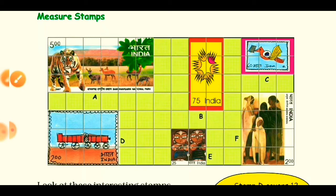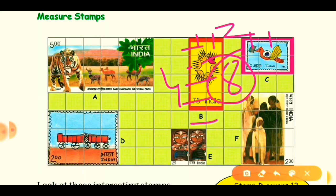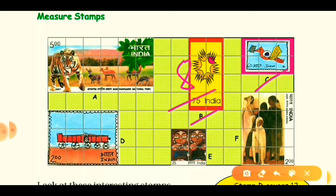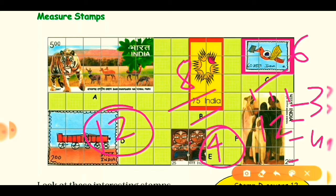Now let's find the areas of all stamp tickets quickly. For stamp B: length is 2 centimeters, breadth is 4 centimeters, so 2 × 4 = 8 square centimeters. For stamp C: length is 3 centimeters, breadth is 2 centimeters, so 3 × 2 = 6 square centimeters. Stamp D is already found: 12 square centimeters. For stamp E: 2 × 2 = 4 square centimeters. For stamp F: length is 3, breadth is 4, so 3 × 4 = 12 square centimeters.